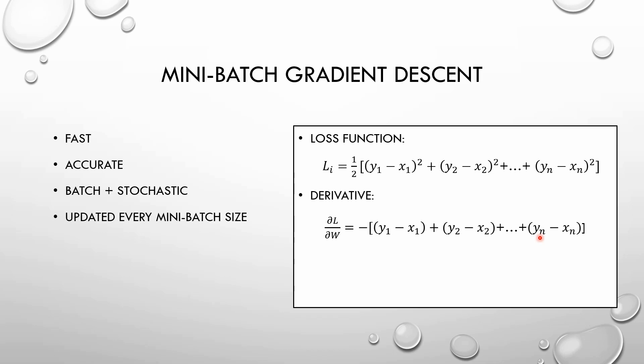The minibatch gradient descent is a mix of the two gradient descent types we have seen before. It's faster, it has high accuracy, and you update it on every minibatch size. A minibatch algorithm is the most favorable and widely used algorithm that makes precise and faster results using a batch of N training examples. In minibatch, rather than using the complete dataset, in every iteration we use a set of N training examples. So it's better for rapid computation.